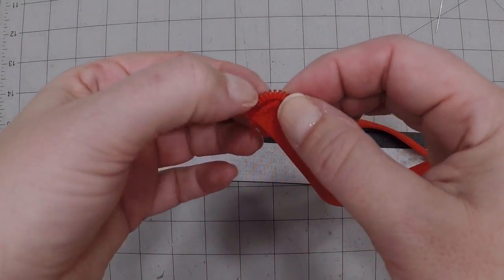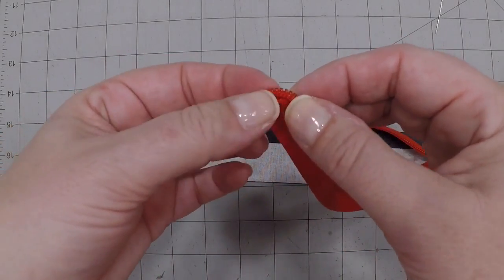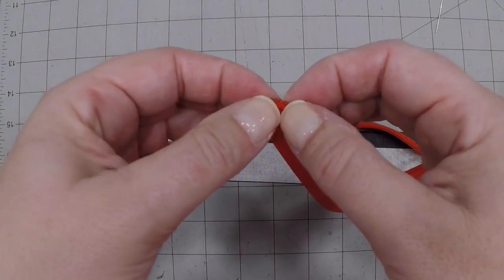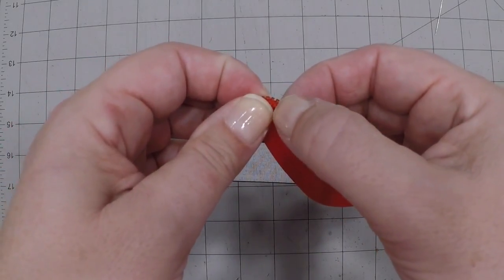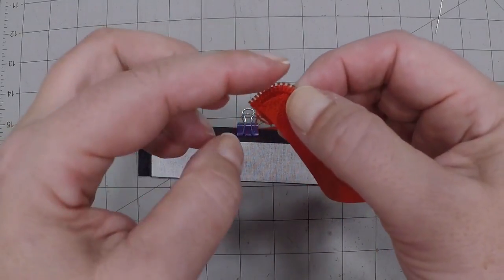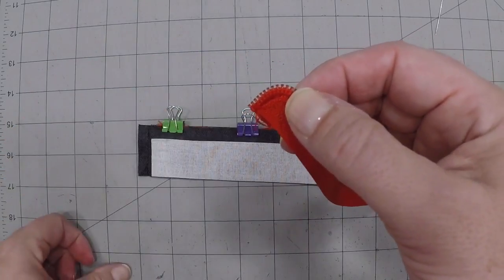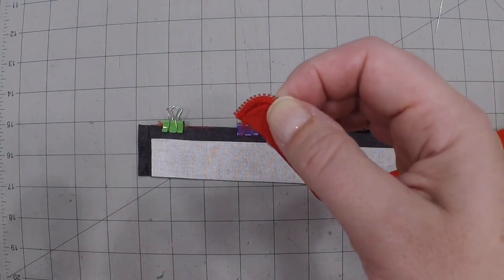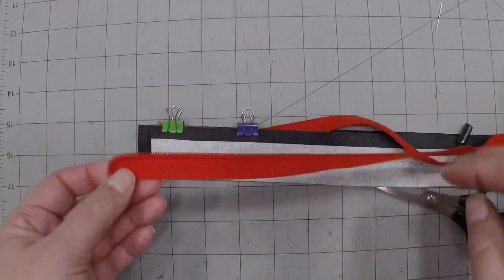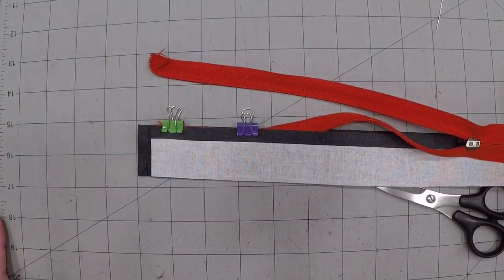Because you don't end up taking those coils off anyway. You have a little silver thing here that's your stop, but you're still dealing with all the teeth. It's not like metal zippers where you can actually just take your teeth off. Anyway, I hope that helps and hope that clarifies.